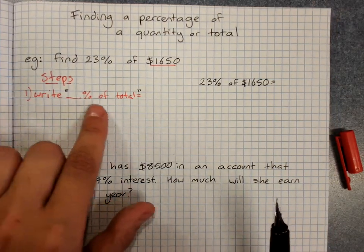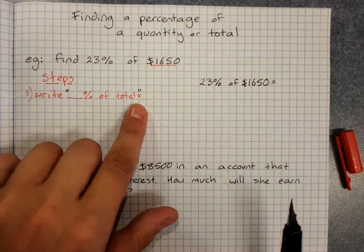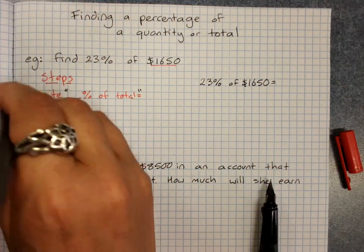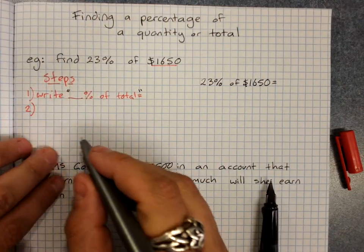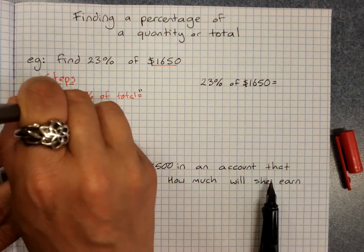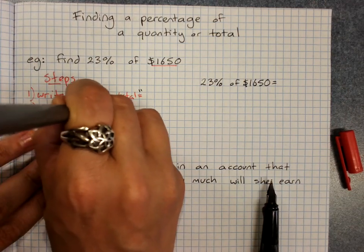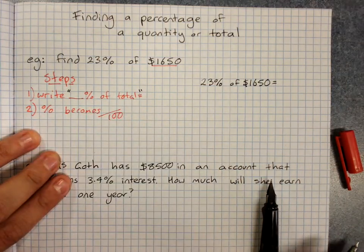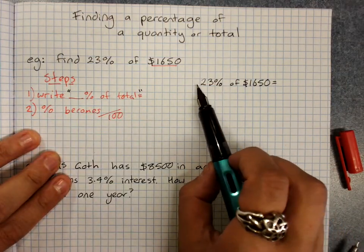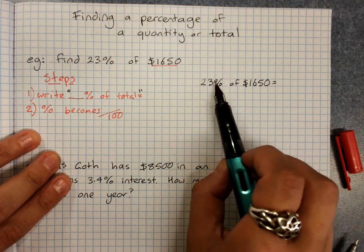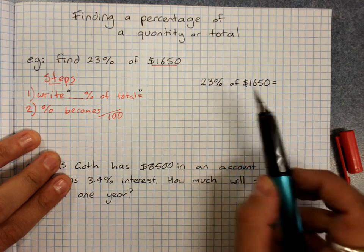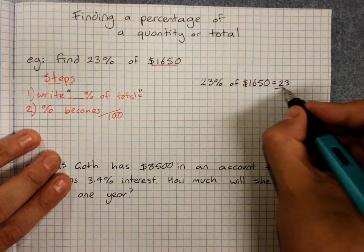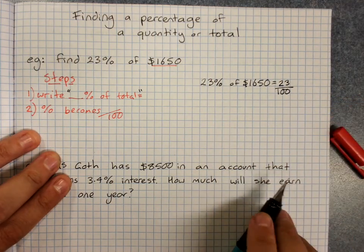Now the reason you write it just like that is because this tells you what your working will be. Percent becomes over a hundred. So instead of writing 23% that percent you notice how it looks like one and two zeros. Write it as 23 over a hundred in this case.